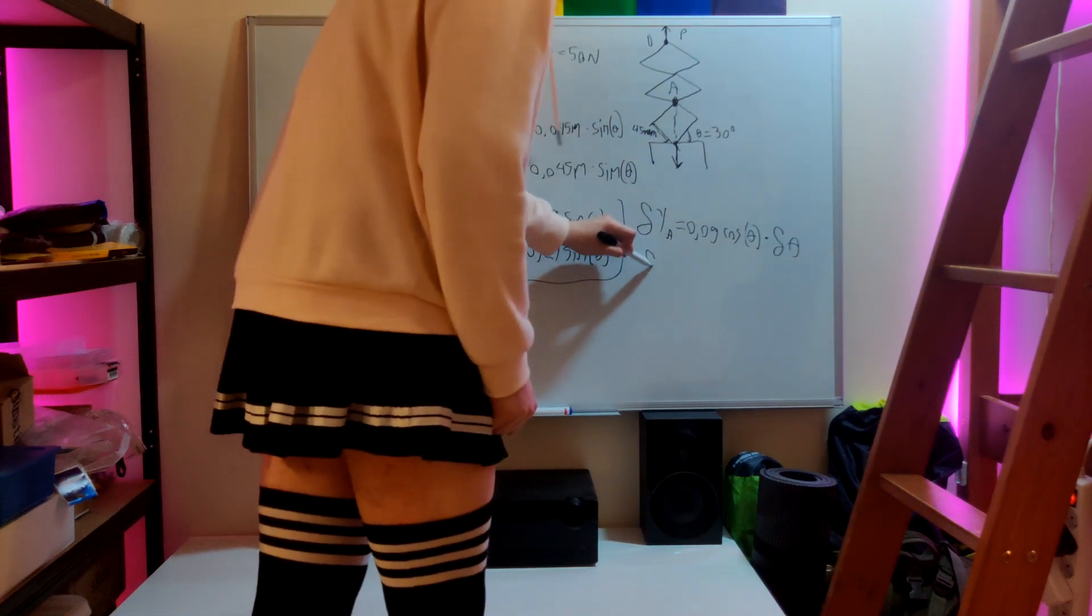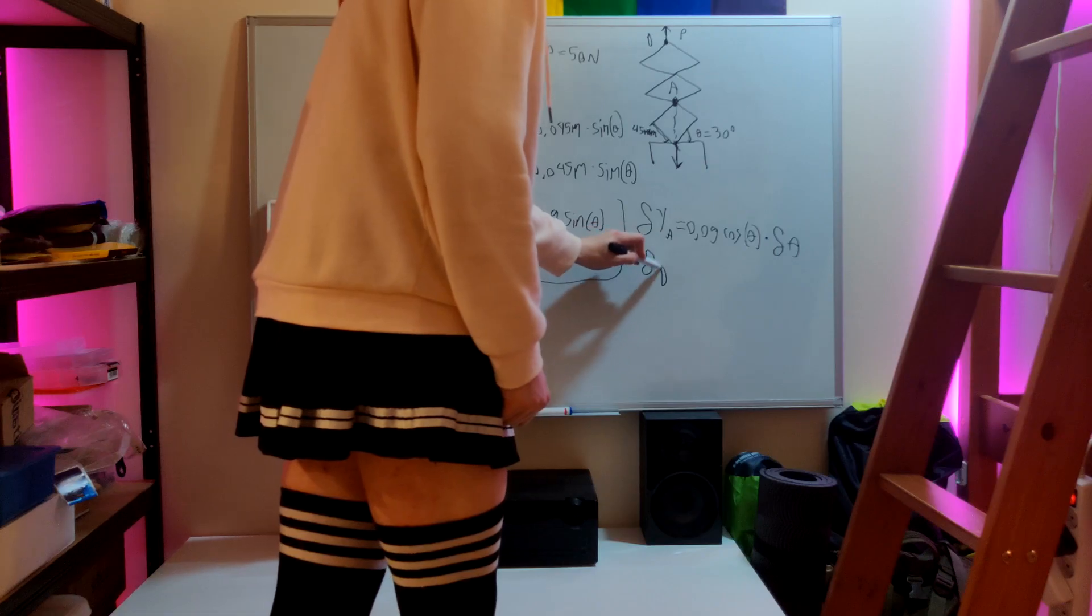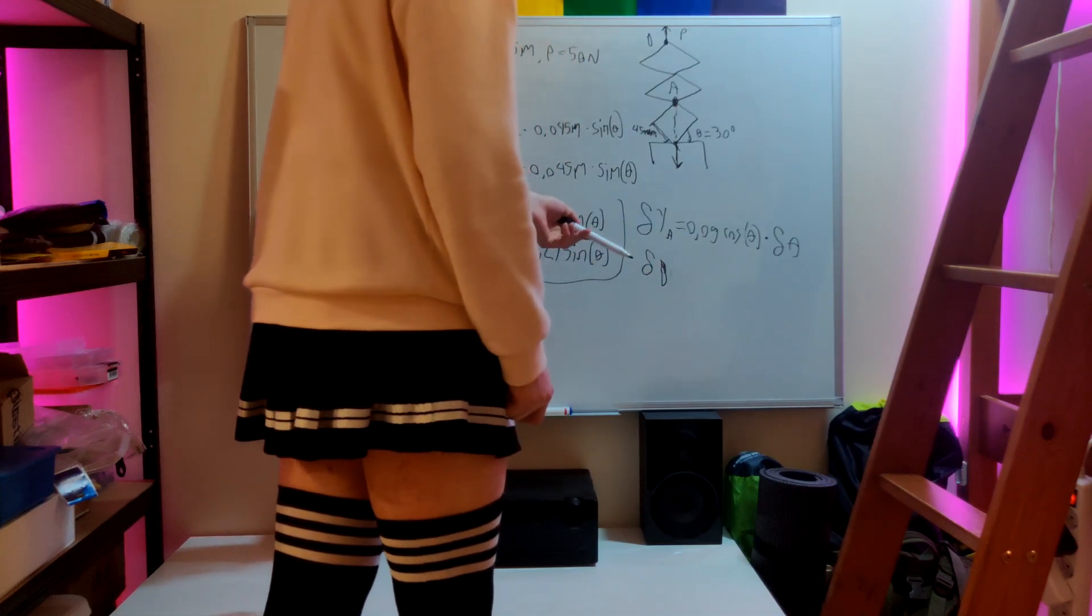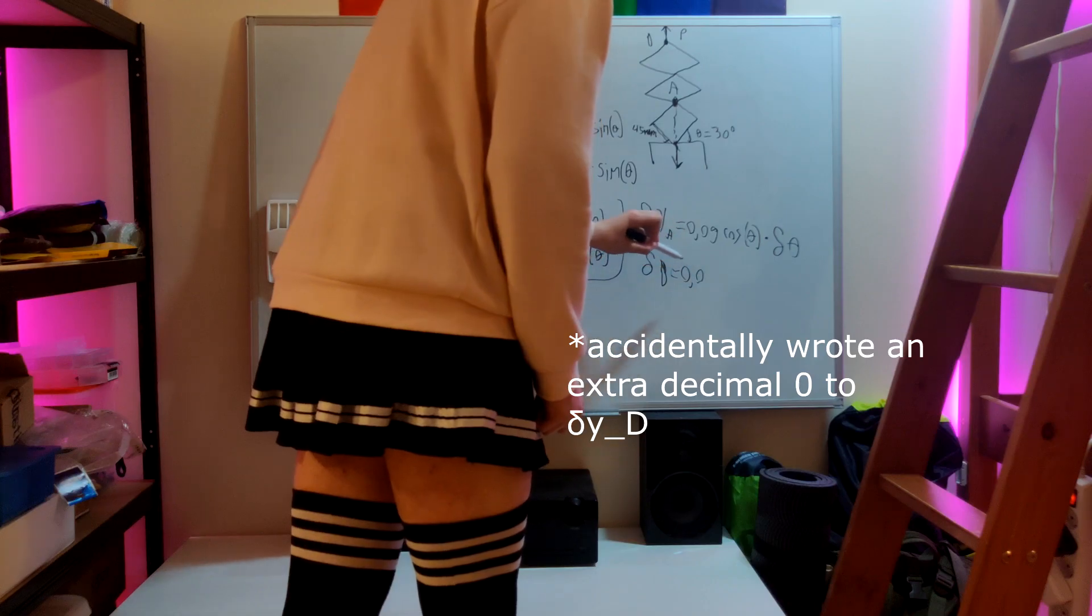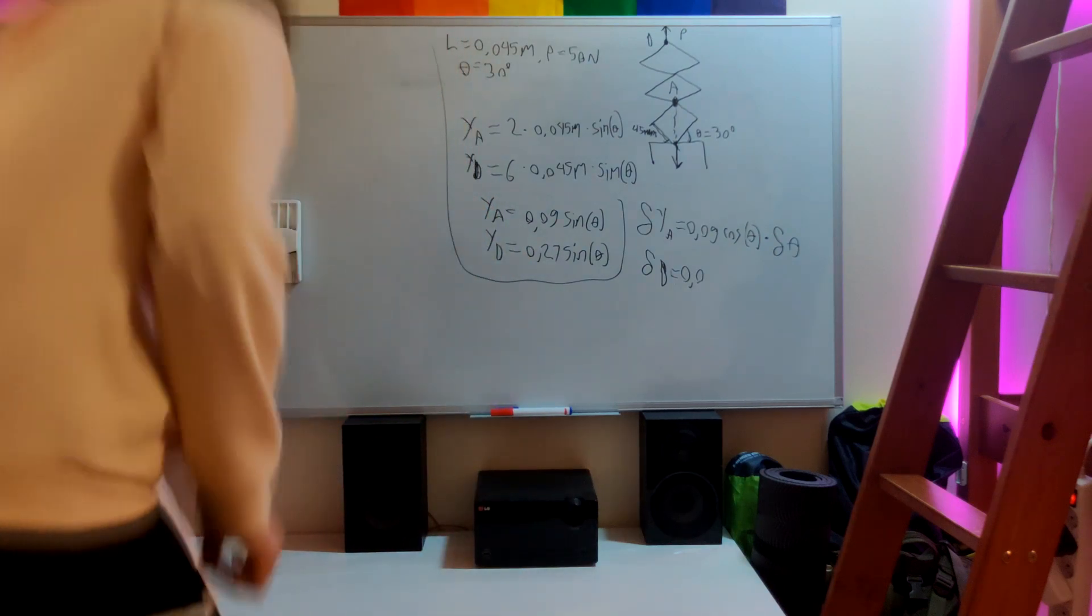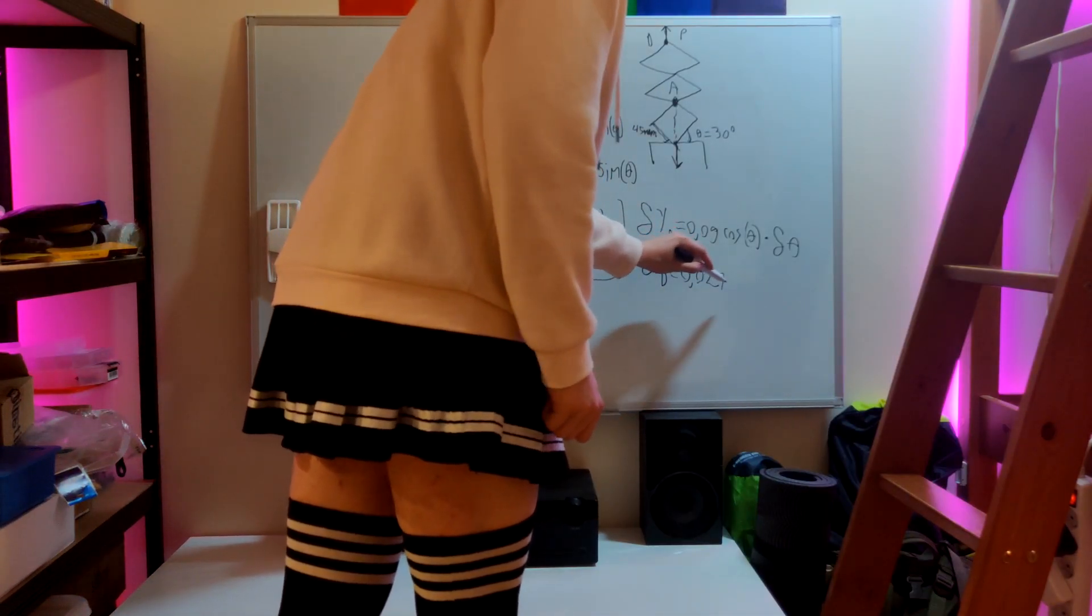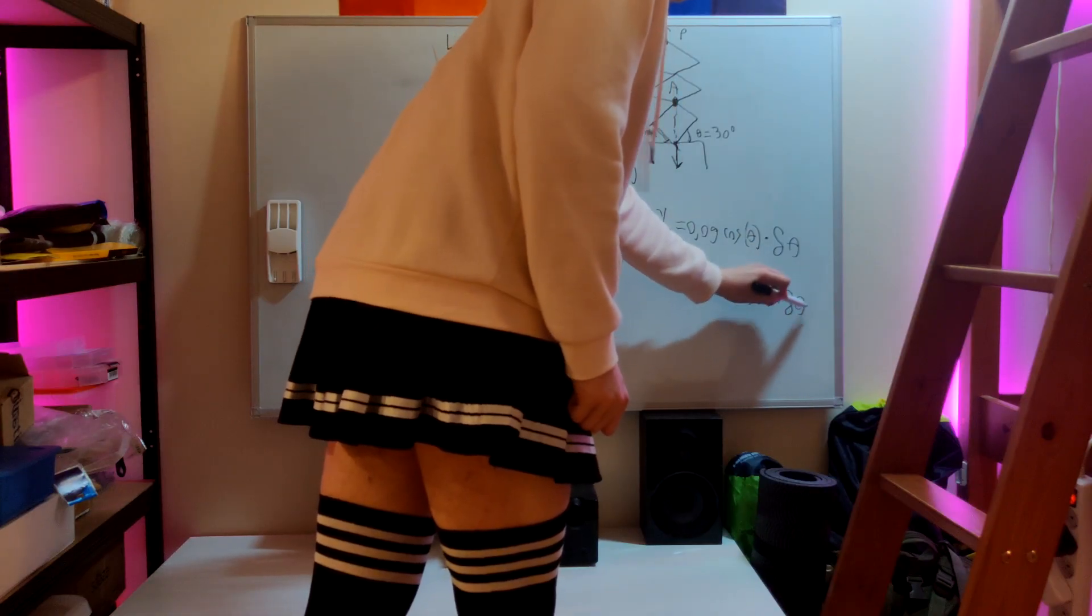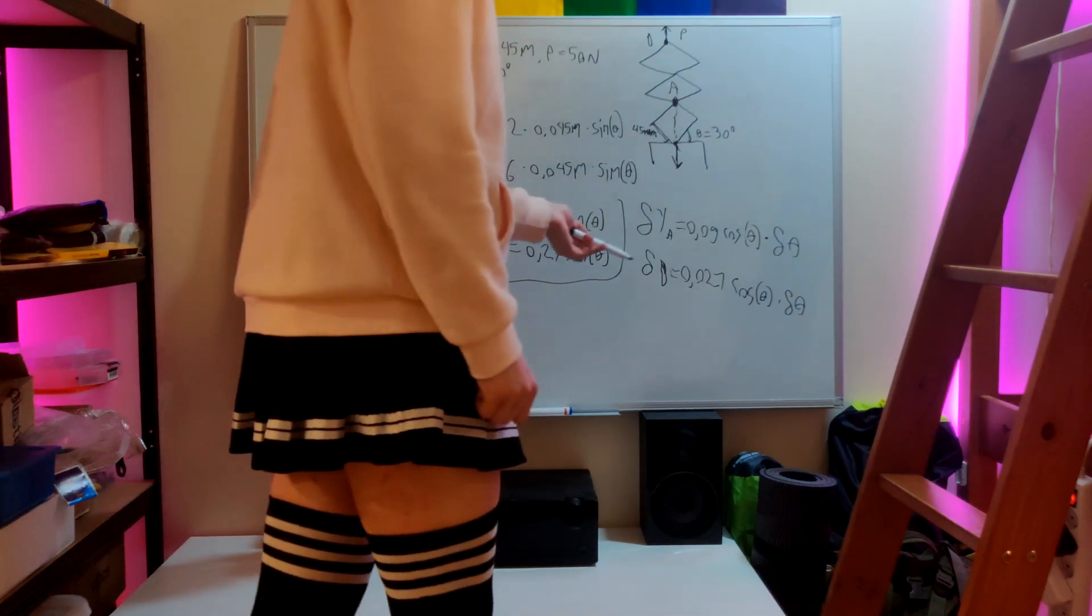And for an infinitely small change in the location of point D right here, we can write it as 0.027 cosine of theta times the infinitely small change in theta. And now we can write the equation for the virtual work.